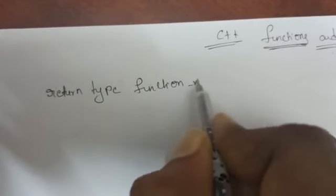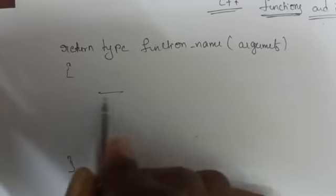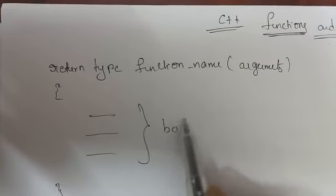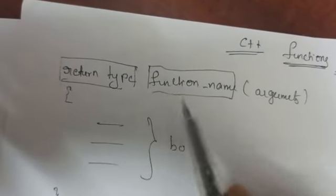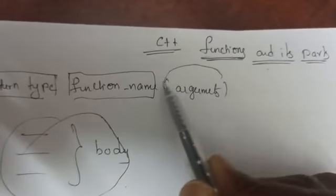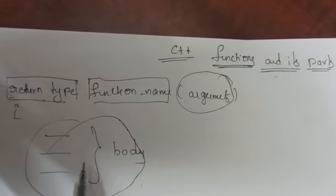A function has a return type, a function name, and inside brackets there are arguments, and a block — this is called the function body. Here this is the return type, this is the name by which we identify the entire body of the function, these are the arguments — the values we are passing to the function. So: return type, function name, arguments, and body of the function.